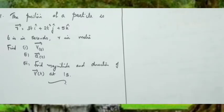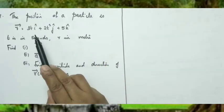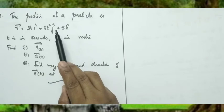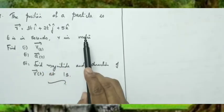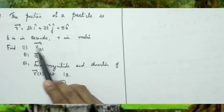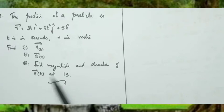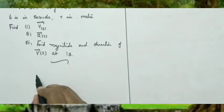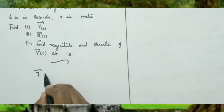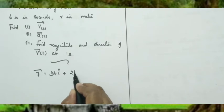Now we can do some numericals relating vectors and projectile motion. First question: the position of a particle is vector r equals 3t i-cap plus 2t² j-cap plus 5k-cap, where t is in seconds and r is in meters. Find the velocity vector, acceleration vector, and the magnitude and direction of the velocity vector at one second.